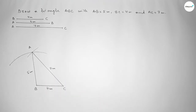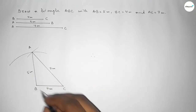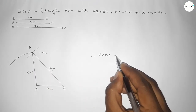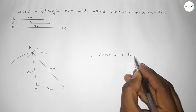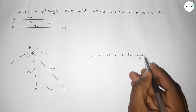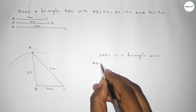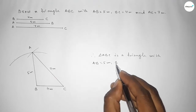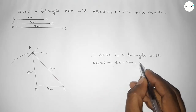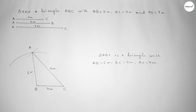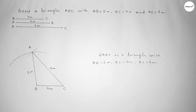So triangle ABC has side BC equal to 4 centimeter, side AC equal to 7 centimeter, and side AB equal to 5 centimeter. Therefore triangle ABC is complete with AB=5 cm, BC=4 cm, and AC=7 cm. That's all — thanks for watching! If this video is helpful, please share it with your friends.